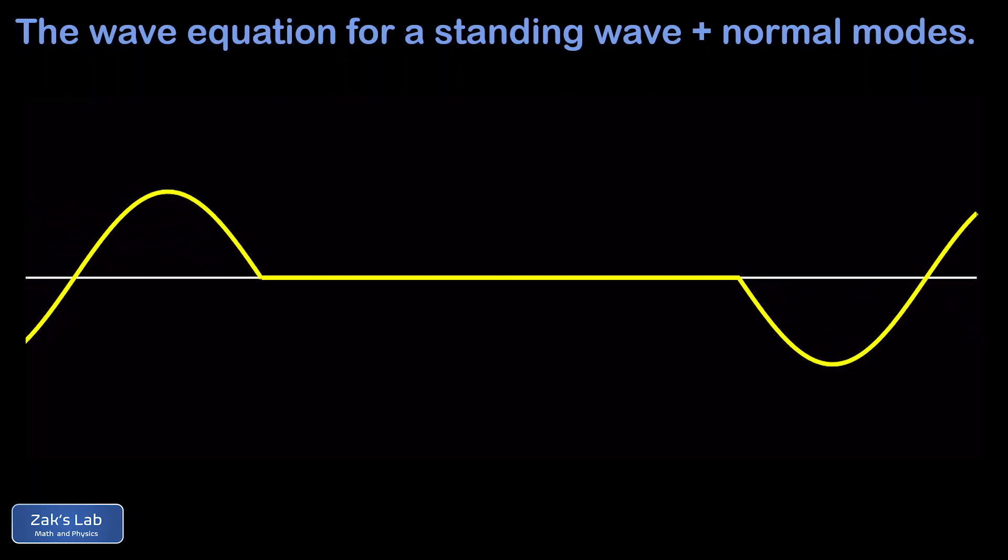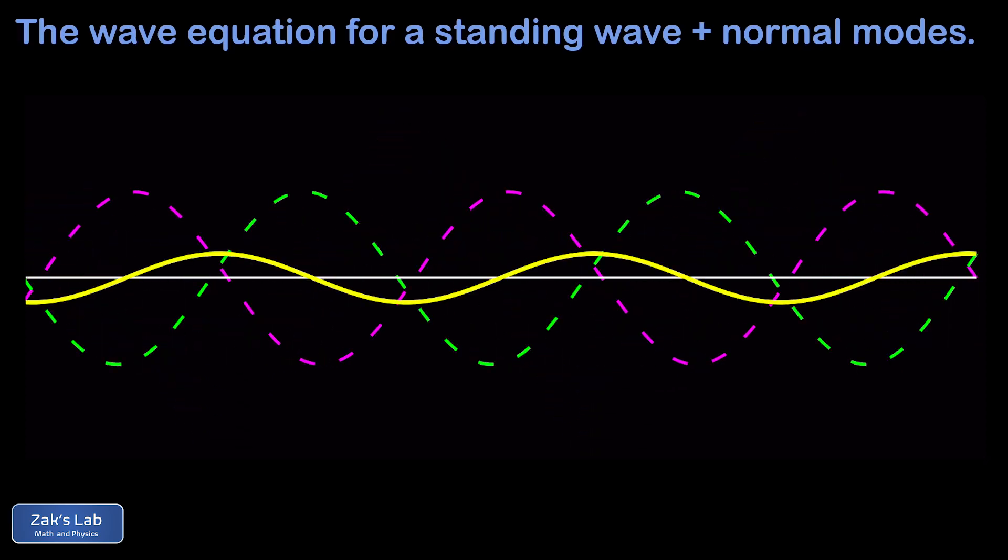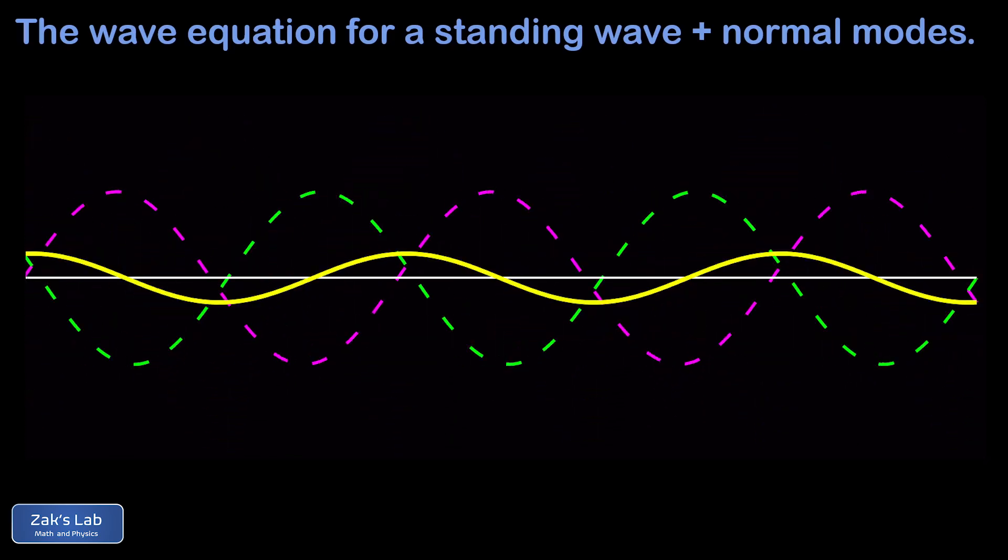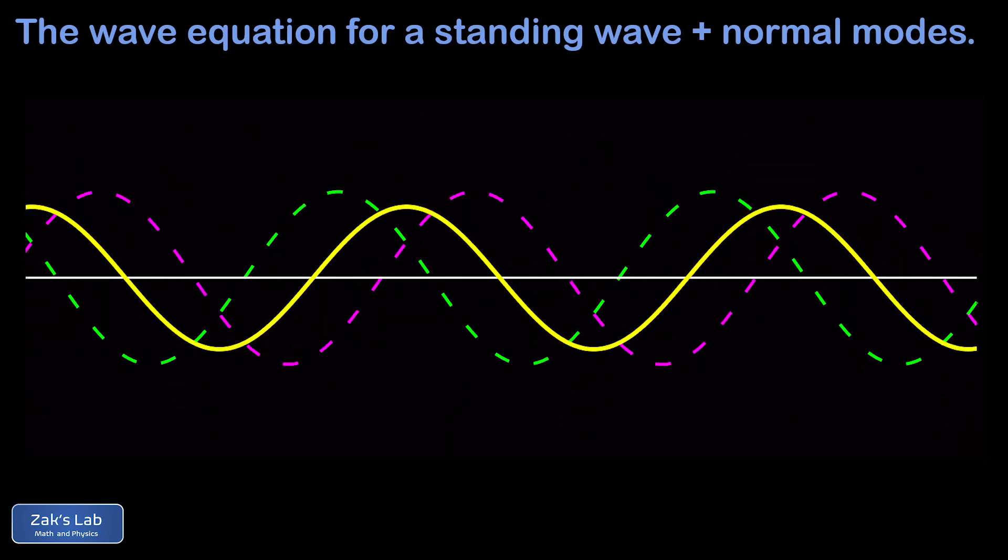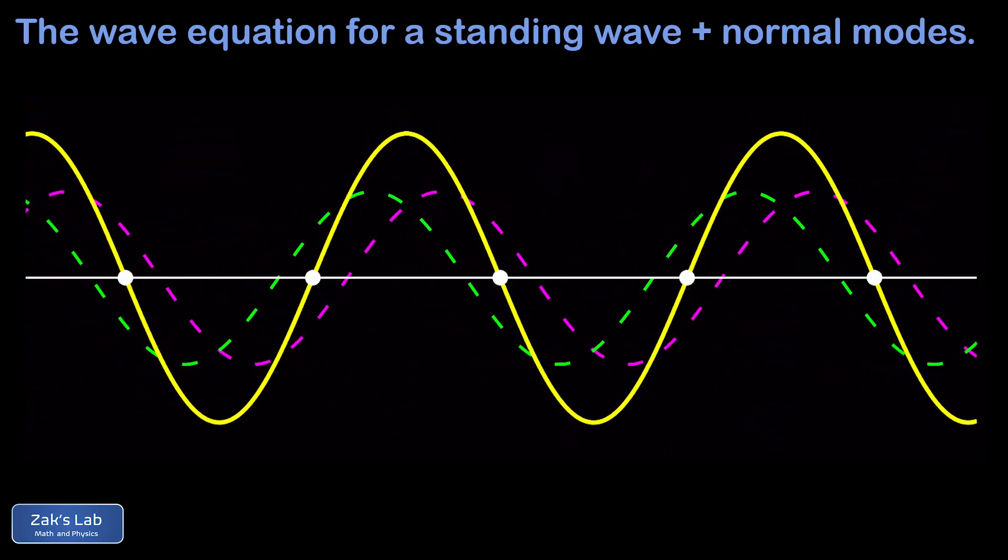When two waves of the same frequency collide on a string, the result is called a standing wave. We see that the resulting superposition of waves no longer appears to travel in any particular direction, instead simply repeating the same oscillation in place.